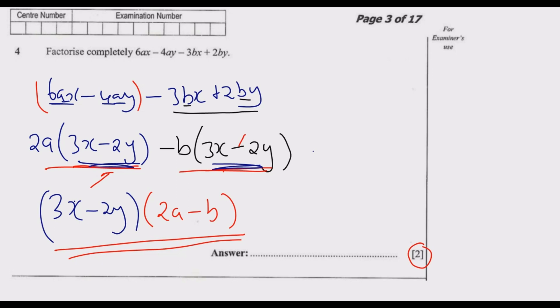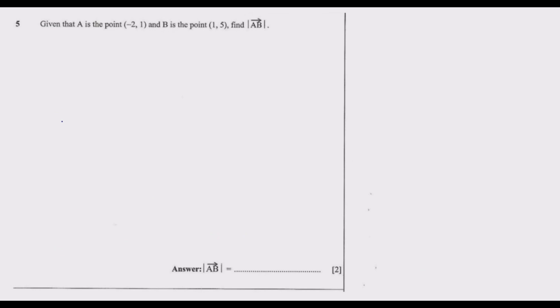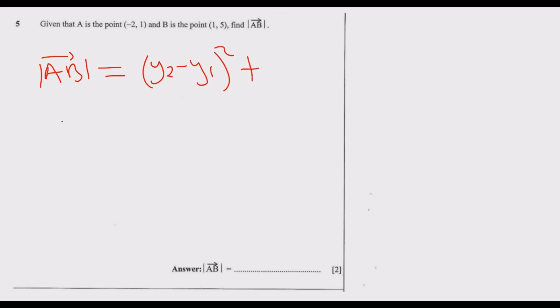Let us move to question five. Given that A is the point (-2, 1) and B is the point (1, 5), find AB — the distance between A and B. The distance formula is: AB = √[(y₂ - y₁)² + (x₂ - x₁)²]. You find the change in y, square it, add the change in x squared, then take the square root.